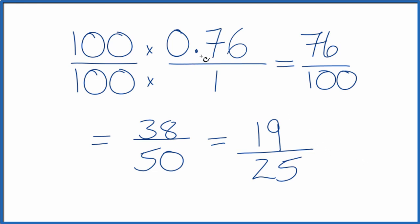So the decimal 0.76, that equals the fraction 19 over 25, or 38 over 50, or 76 over 100. And if you divide 19 by 25, or 38 by 50, or 76 by 100, you'll get the decimal 0.76.